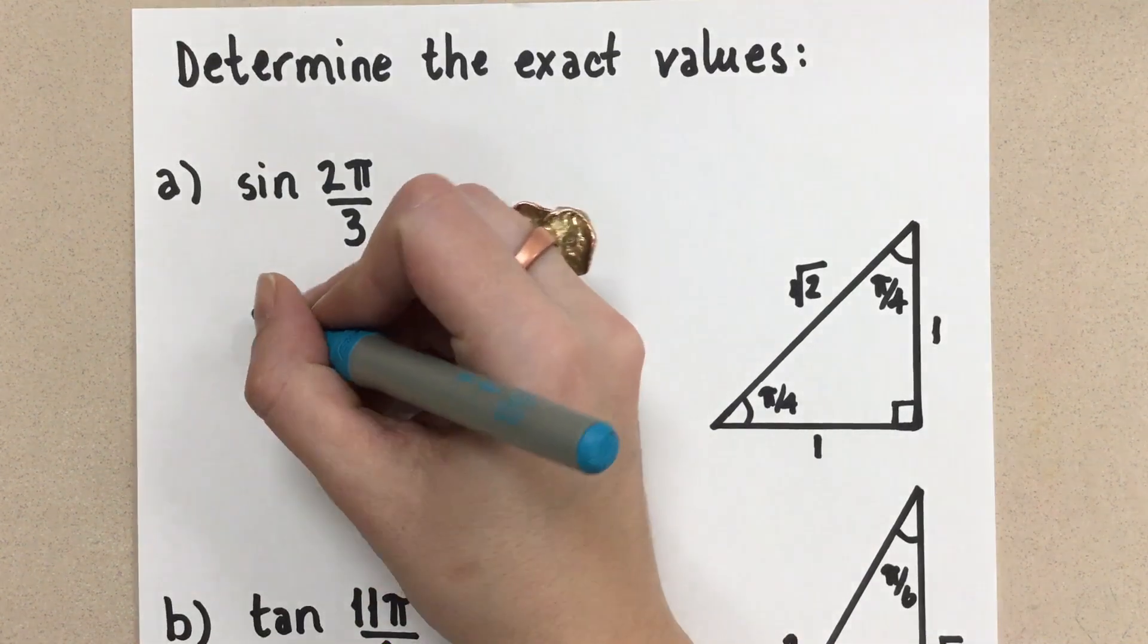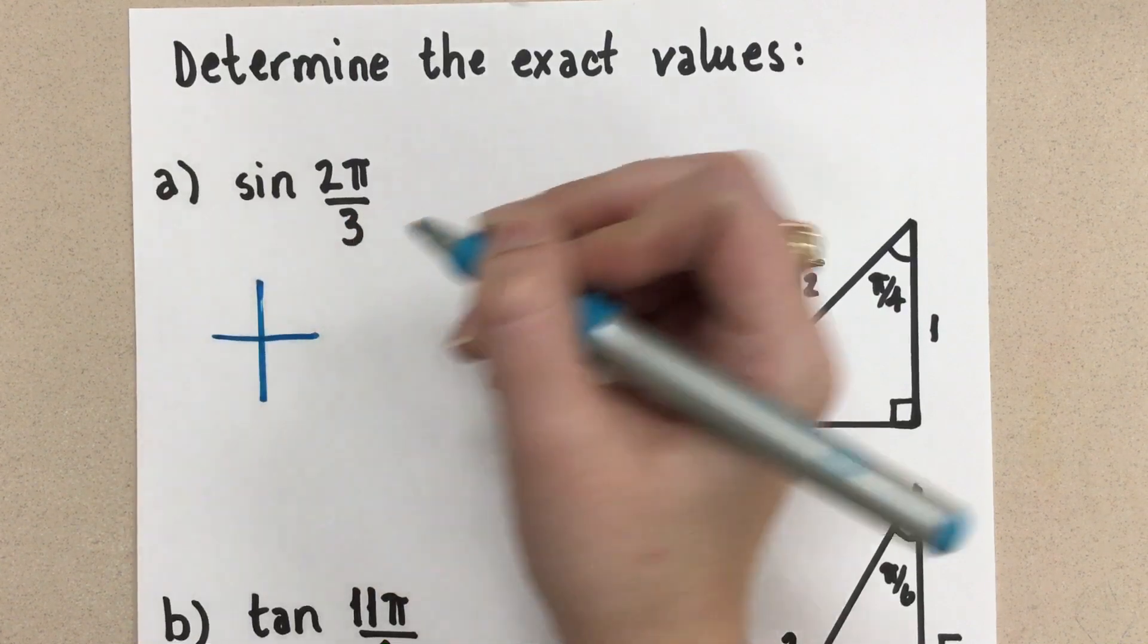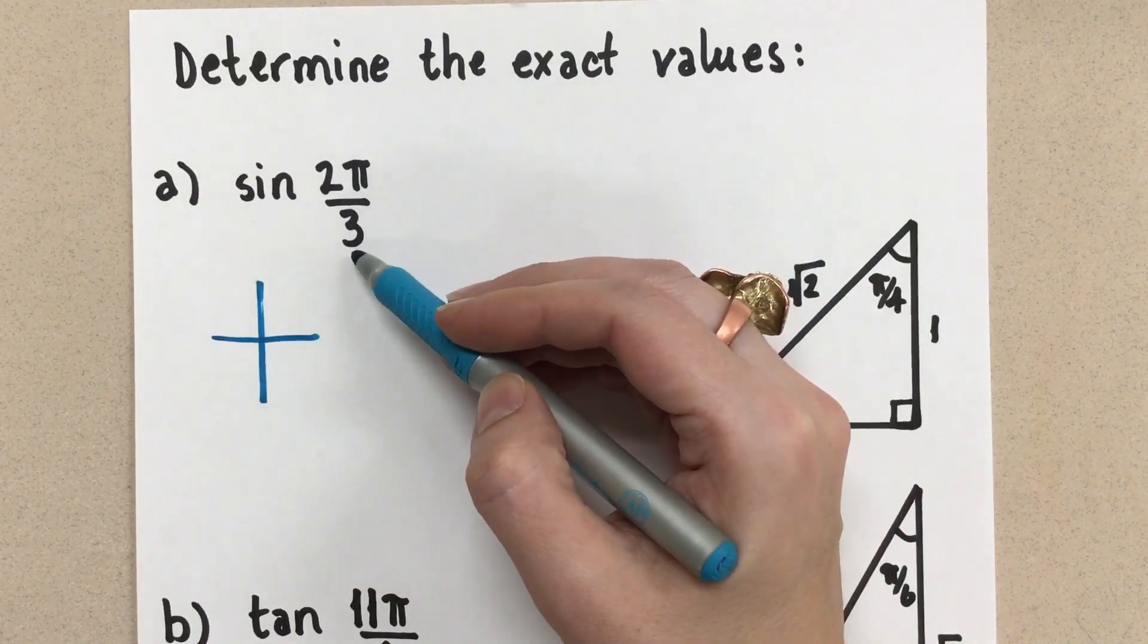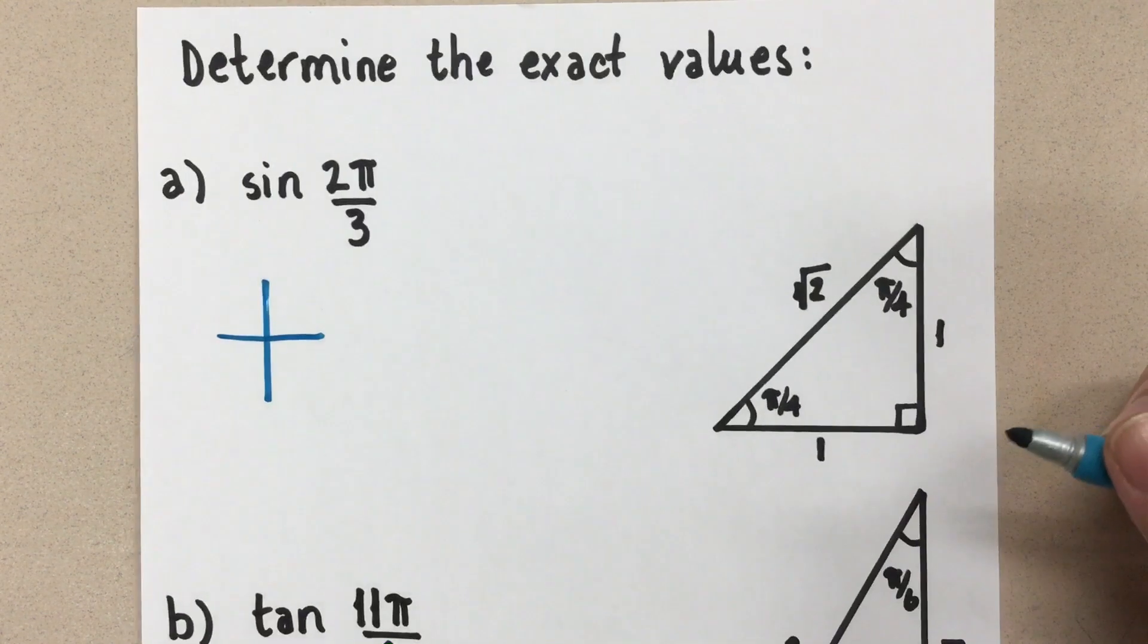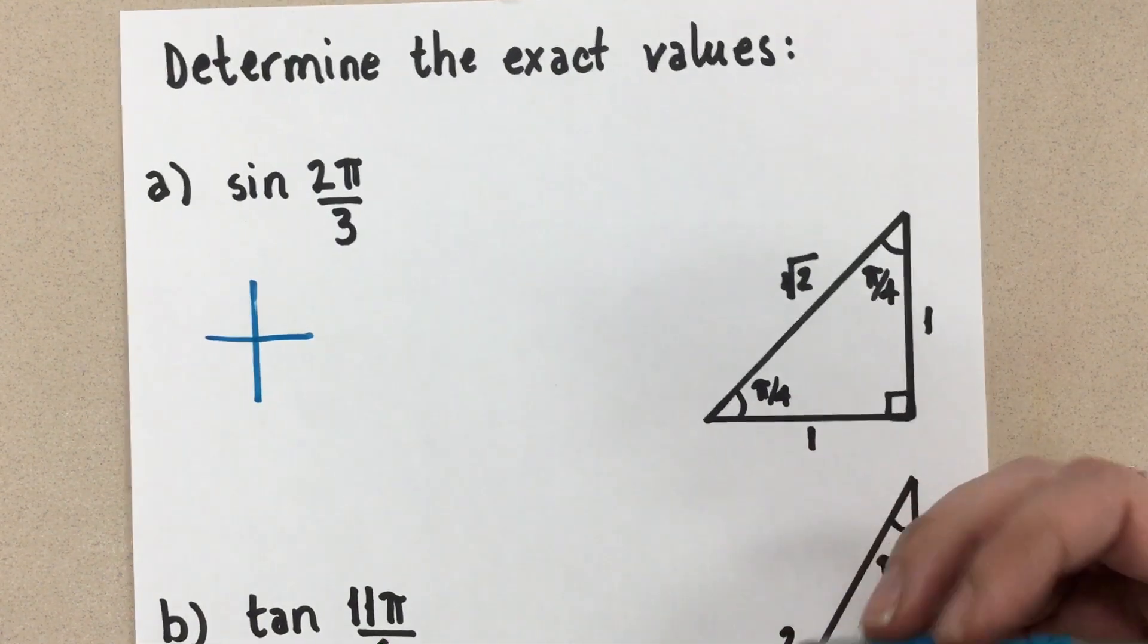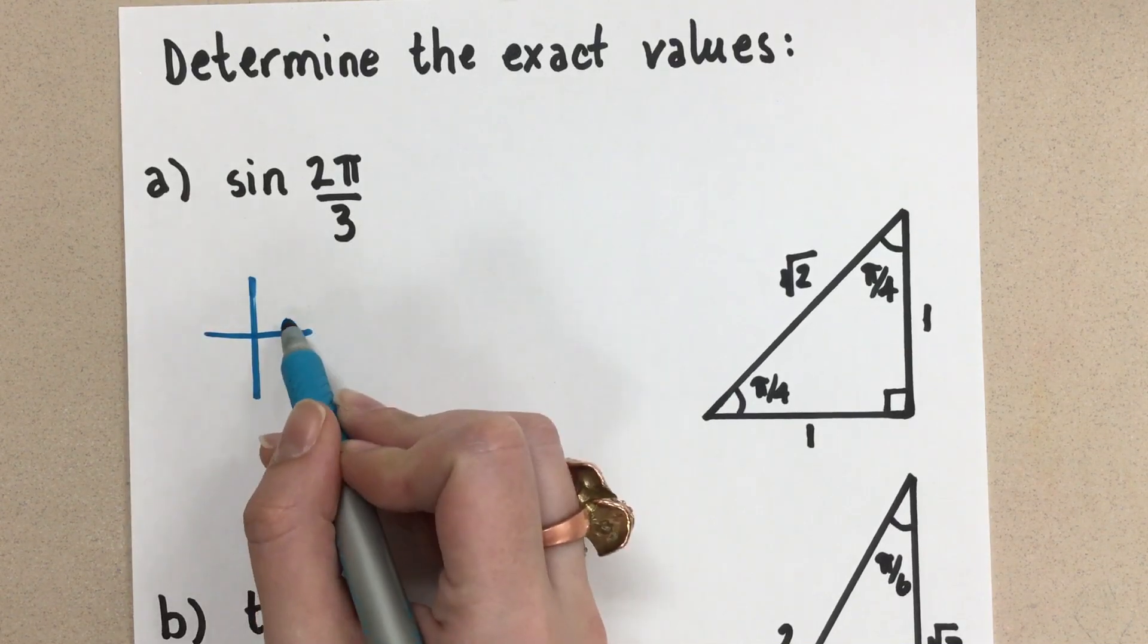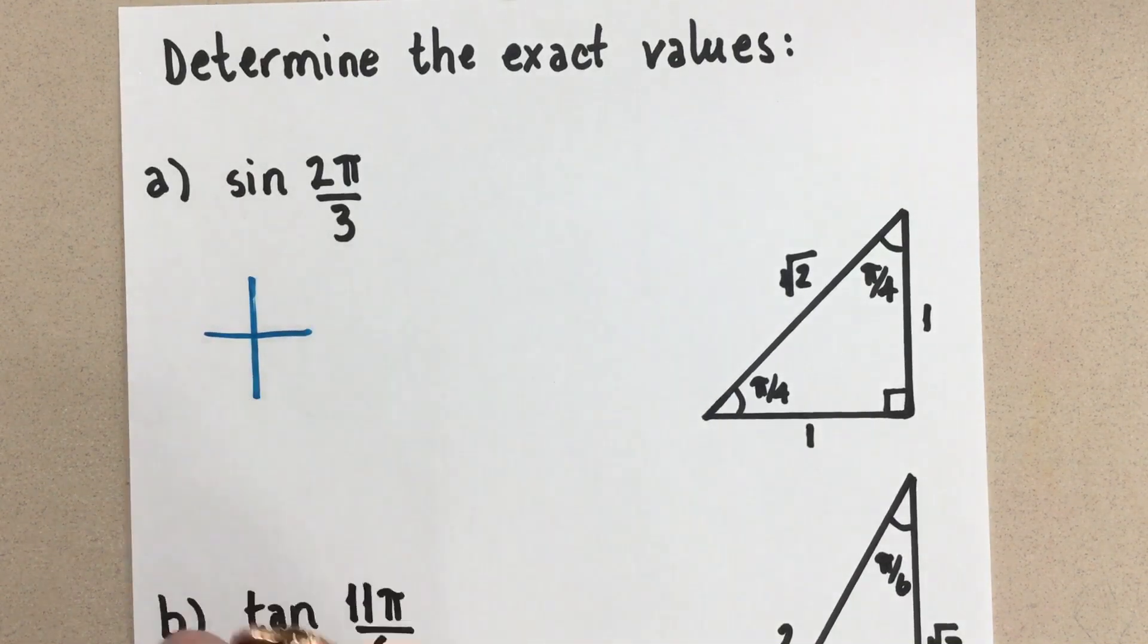I'm going to do a little rough sketch here for my Cartesian plane, and I'm going to plot that 2π over 3. Now we're dealing with radians, so if it's hard for you to imagine where that angle goes, remember we start on the positive x-axis and we work counterclockwise, just like we do with degrees.